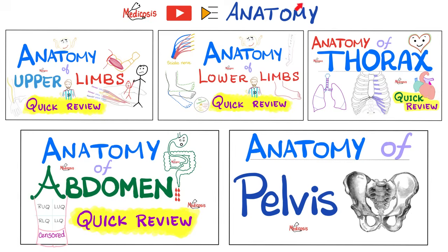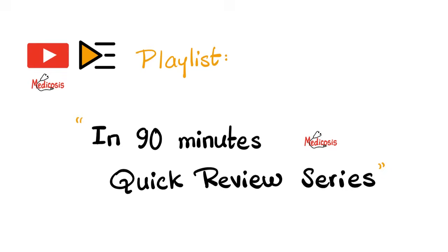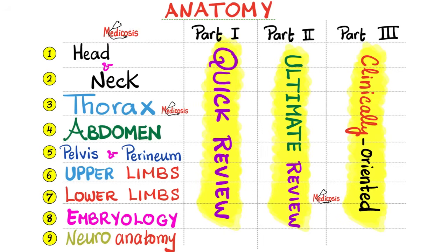Quick review. In my anatomy playlist, you will find review videos for the upper extremities, lower extremities, the thorax, abdomen, pelvis and perineum, neuroanatomy, and embryology. In my playlist titled 'In 90 Minutes Quick Review,' you will find that every region in anatomy is covered in three videos: part one is quick review, part two is ultimate review, and part three is clinically oriented anatomy for that region.